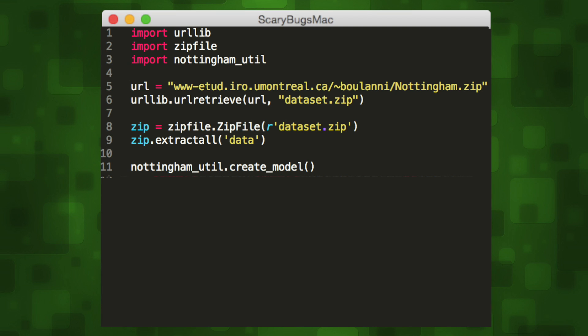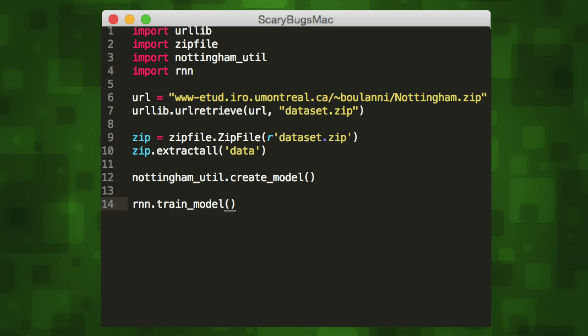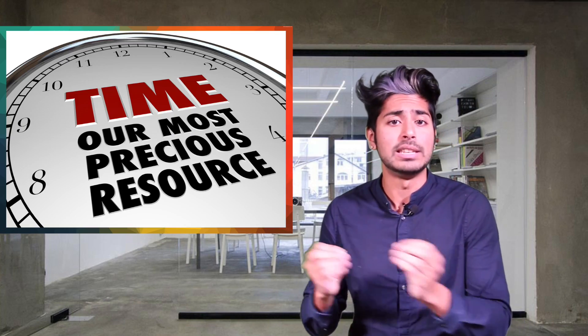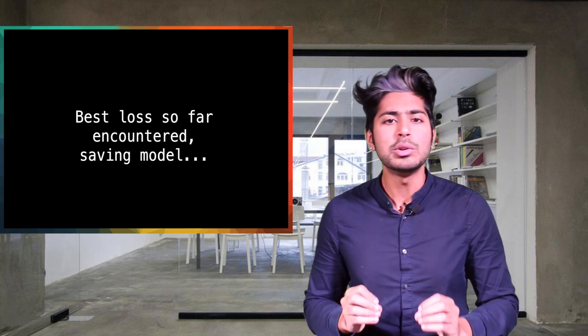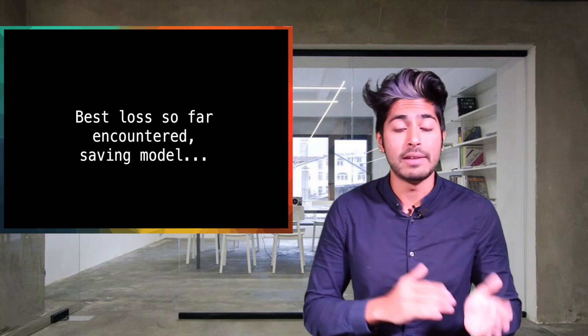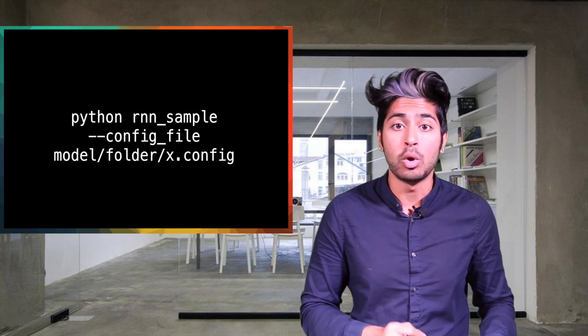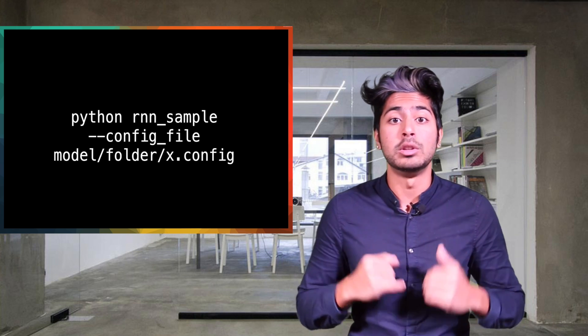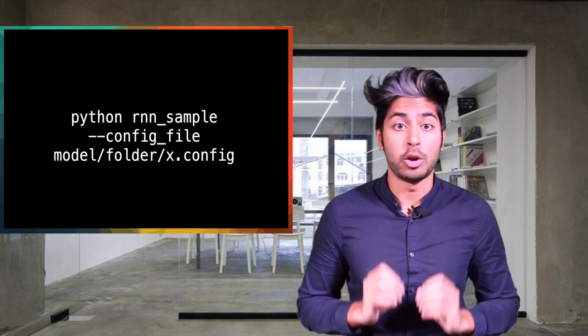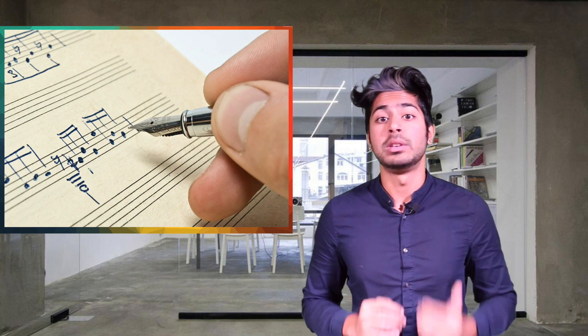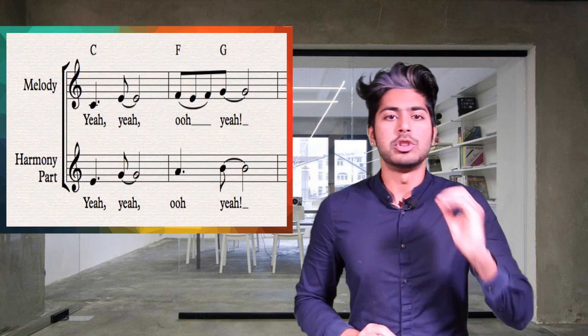Now we're ready to train our model. We can just call the train model method of our neural net class to do this. This will get the network to start collecting the input data piece by piece. It took me about two hours to train this on my 2013 MacBook Pro, but you don't have to wait until it's completely done training to test it out. Just wait until you see the 'best loss so far encountered, saving model' message. Once you see that, you can type rnn sample into terminal with the config file flag and point it to the newly generated config file in your model's folder.